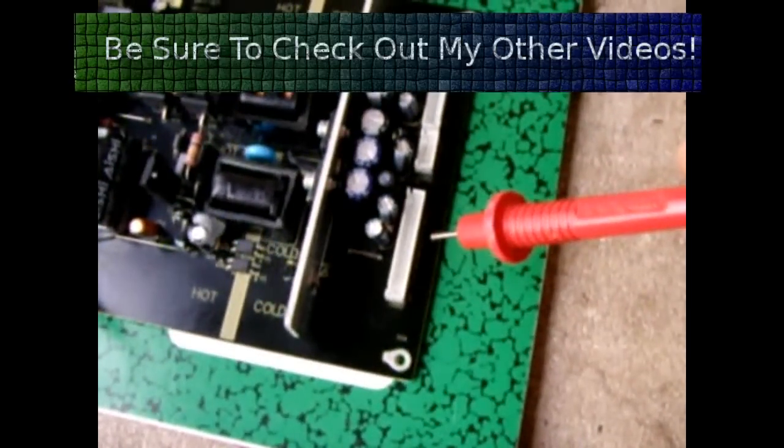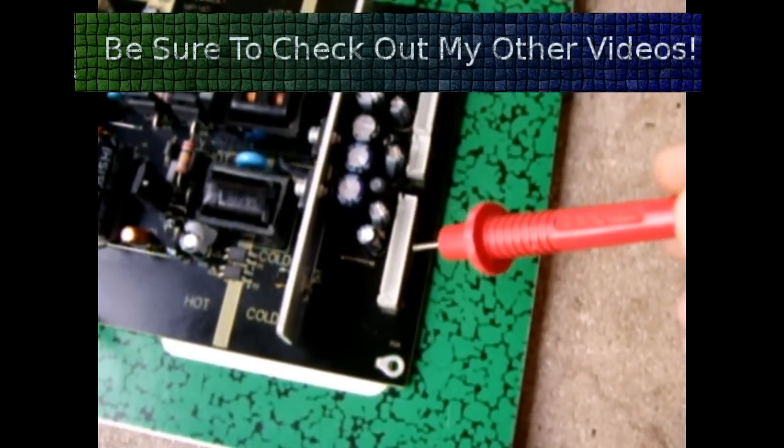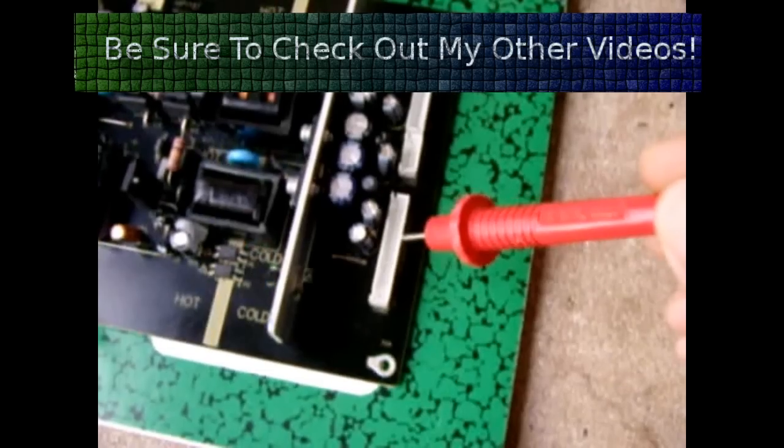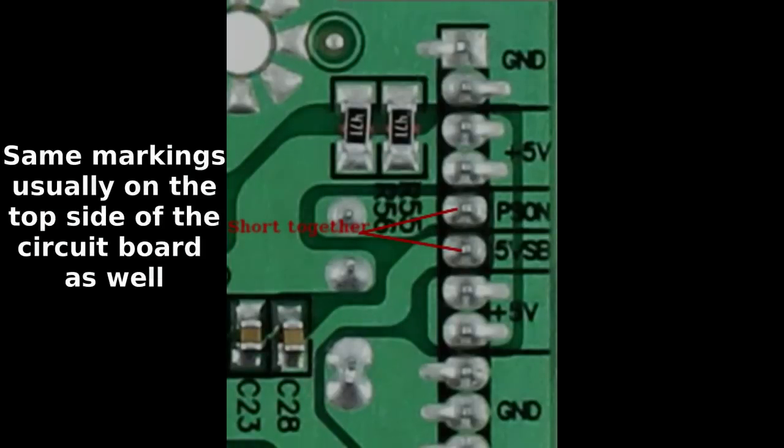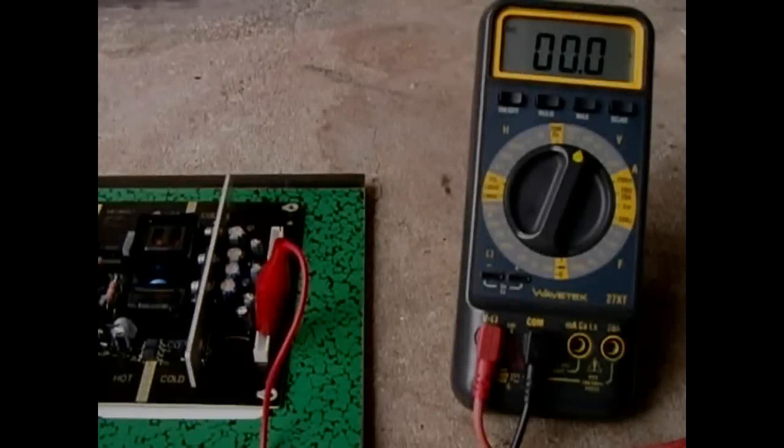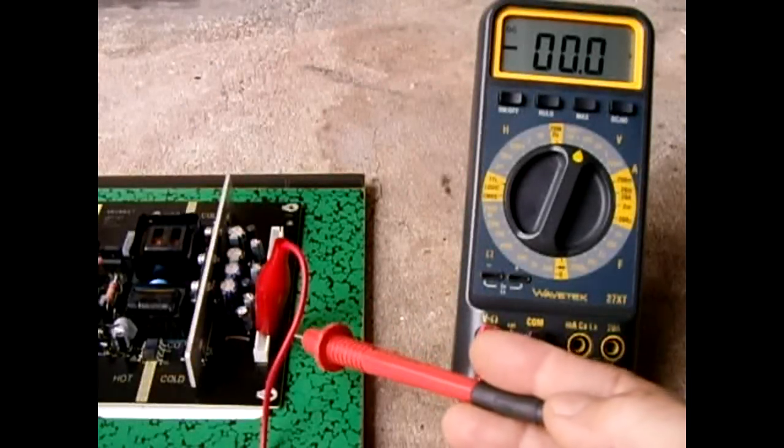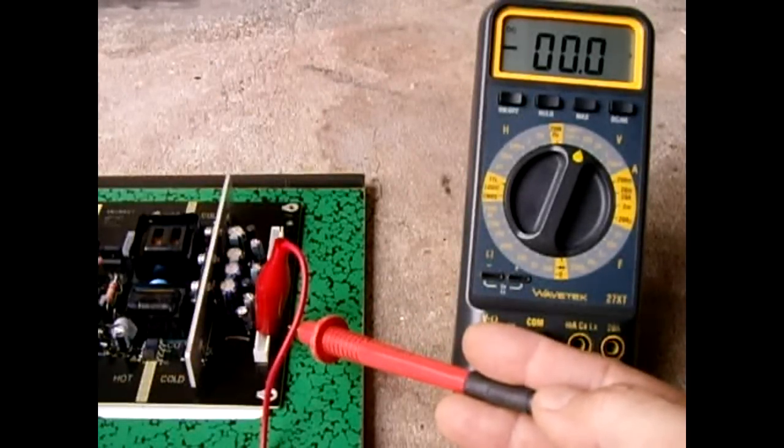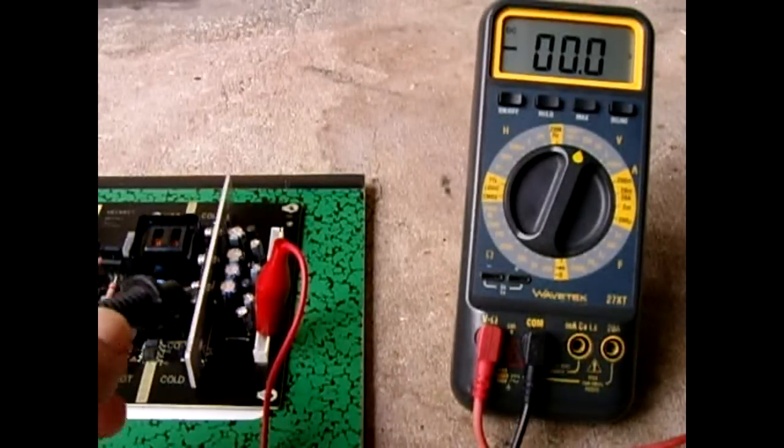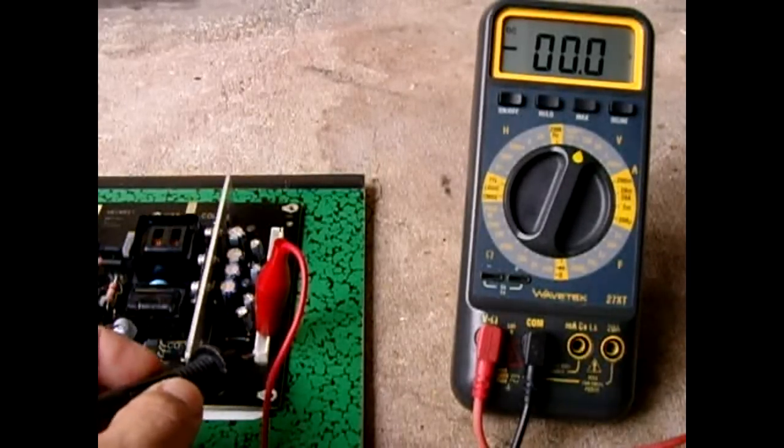You're going to have to short the two pins together, and that will tell the power board to turn on all the other power outputs. What I did to short the power switch on terminals is I put an alligator clip between the two to short them out. Once that's done, all the terminals should have power if they're working properly.